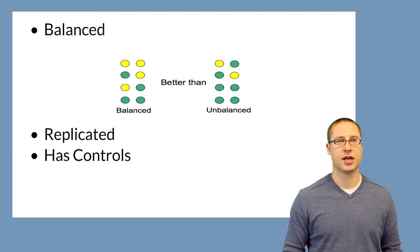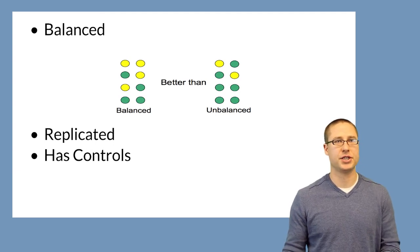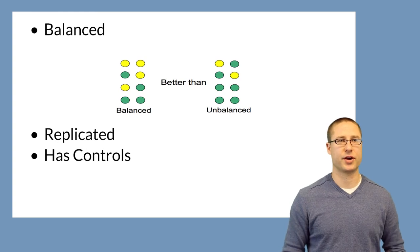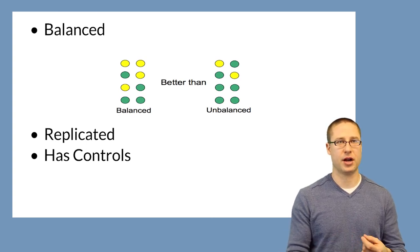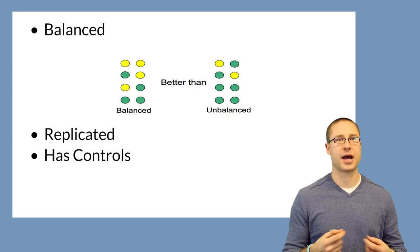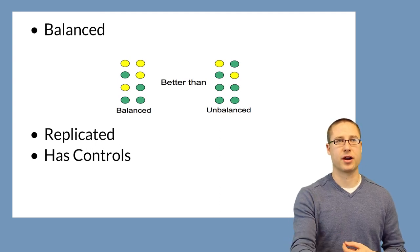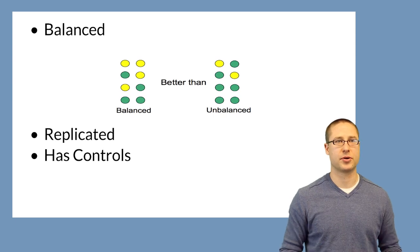A study should also be replicated — if you only take one sample from one person, you have no idea about the variability in the population and the inter-personal biological variability. It's a good idea to take both technical replicates — running two experiments using the exact same sample to measure how well your technology works — and biological replicates, from different individuals, to measure inter-person biological variability. Good designs also have both negative and positive controls to make sure your technology is working and that any effects detected aren't just an artifact of the computation or experimental design.